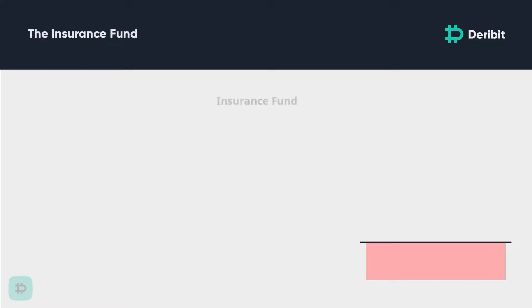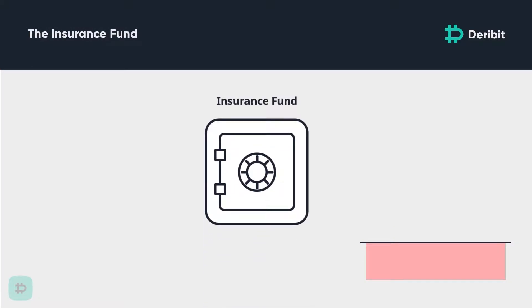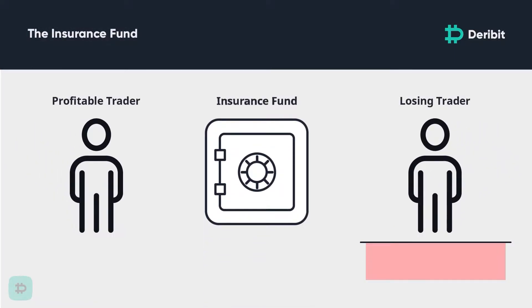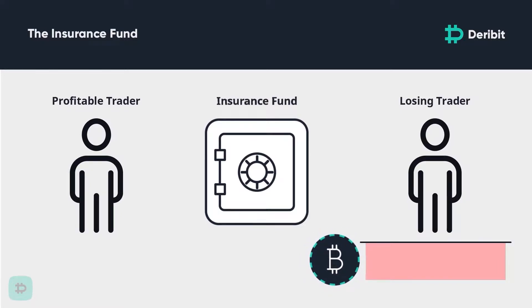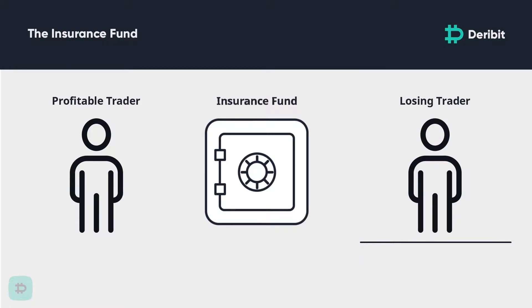How does the system make sure that the trader on the winning side of the trade still gets paid? This is where the insurance fund comes into play. Deribit's insurance fund plugs a deficit, ensuring that the winning trader receives all their profits due, and that the losing trader is not in debt to the other trader or the exchange.